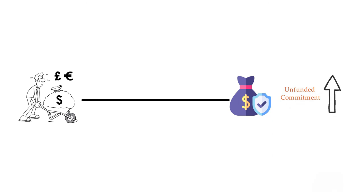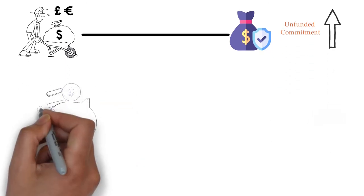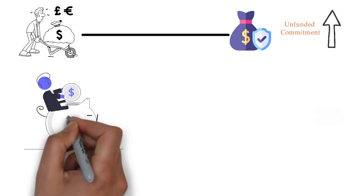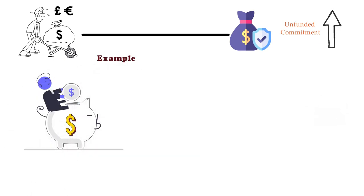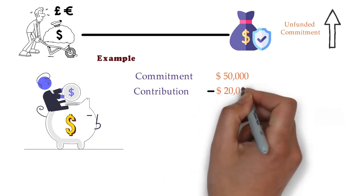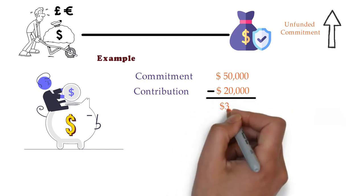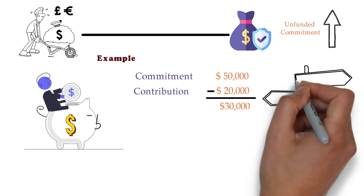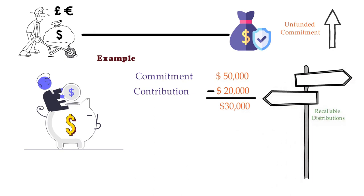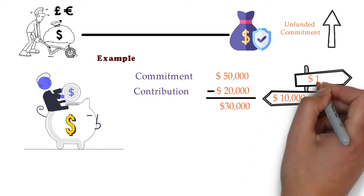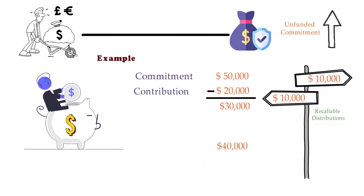Let's understand commitment and unfunded commitment with a basic example. An investor might commit $50,000 into a private equity fund — this is the capital commitment — but may pay only $20,000 on signing the agreement, which is the contribution. Later, the investor receives a distribution of $20,000, out of which $10,000 is recallable. So the unfunded commitment would be $40,000: calculated as $50,000 minus $20,000 plus $10,000.